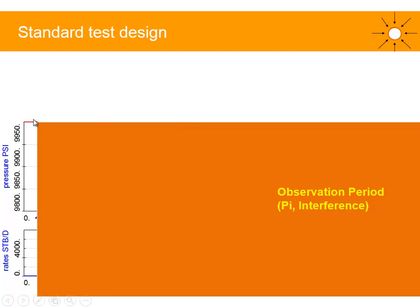Monitoring the pressure trend over time can also give us some information about interference, and this is also in agreement with waiting for daylight to start flowing operations.